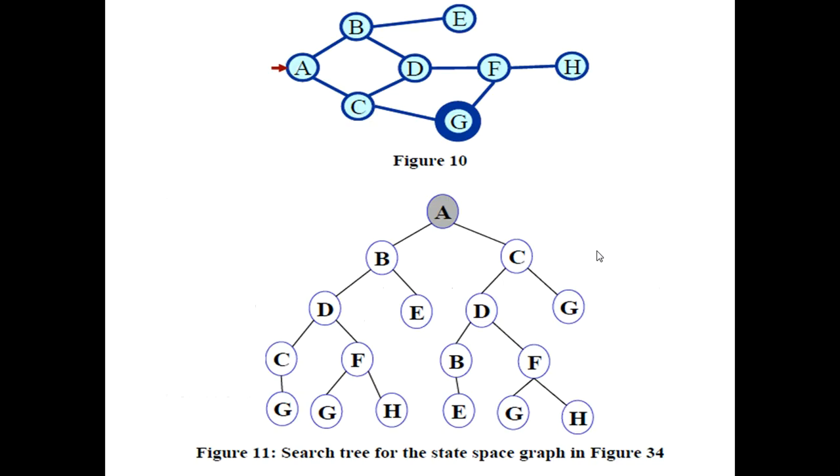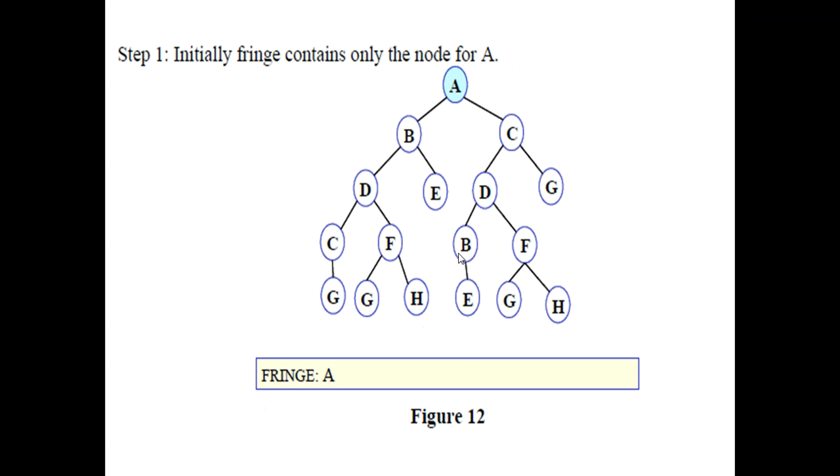This figure shows a graph that we have converted into a tree structure. We are going to implement the depth first search algorithm on this tree. In step one, the OPEN list initially contains the root of the tree. We generate the successors of this root, remove that element, and its children B and C are added to the list.